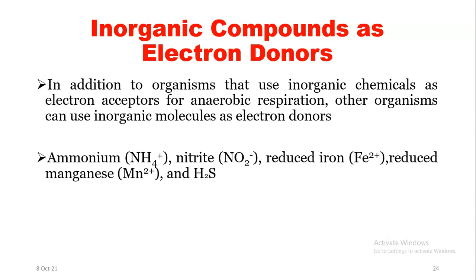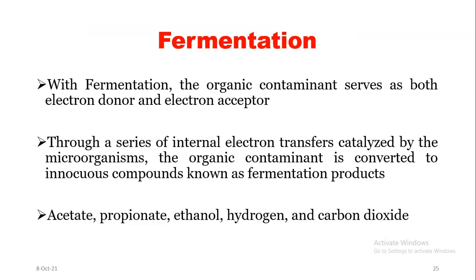In addition to organisms that use inorganic chemicals as electron acceptors for anaerobic respiration, organisms can also use inorganic molecules as electron donors — ammonium, nitrate, reduced iron, reduced manganese, and H₂S are some of these inorganic compounds. With fermentation, the organic contaminant serves as both the electron donor and the electron acceptor. Through a series of internal electron transfers catalyzed by the microorganisms, the contaminant is converted to innocuous compounds — fermentation products such as acetate, propionate, ethanol, hydrogen, and carbon dioxide.